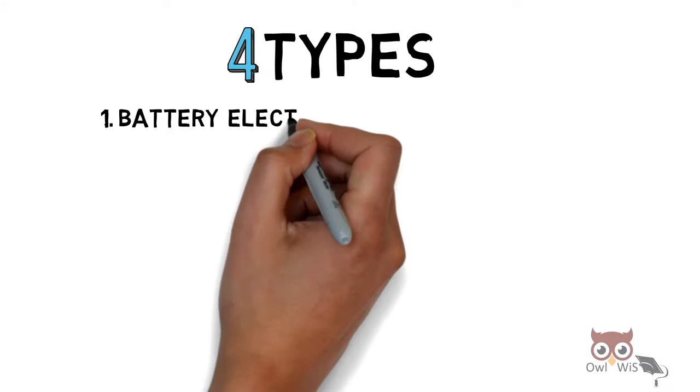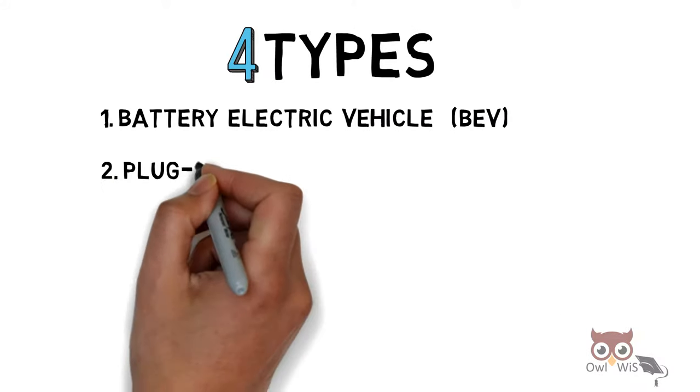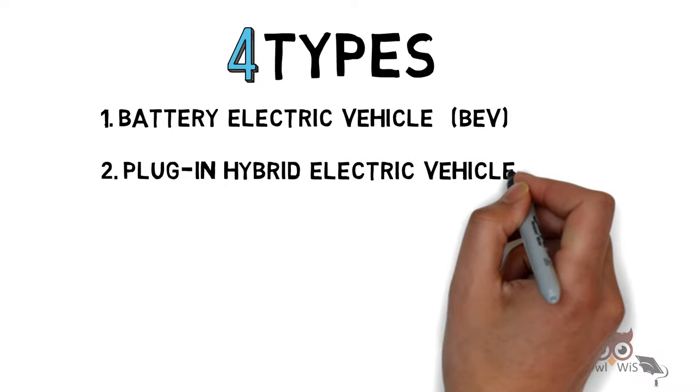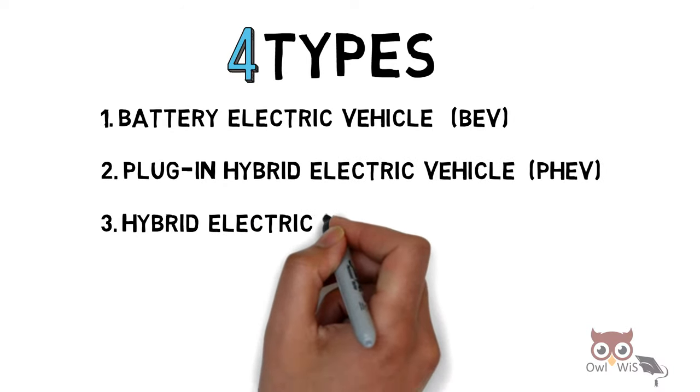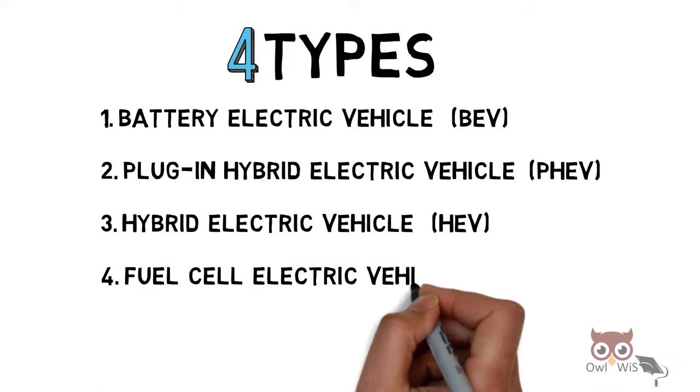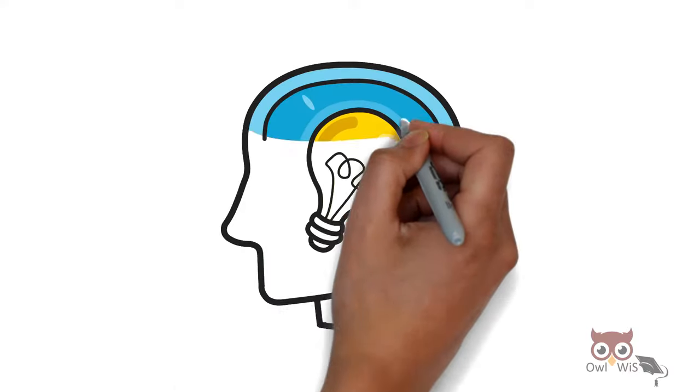Battery Electric Vehicle (BEV), Plug-in Hybrid Electric Vehicle (PHEV), Hybrid Electric Vehicle (HEV), and Fuel Cell Electric Vehicle (FCEV). Let us understand each one of them.